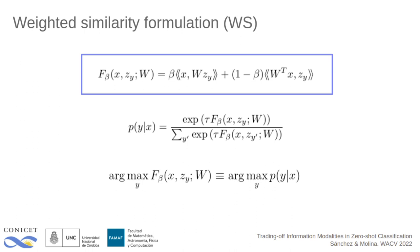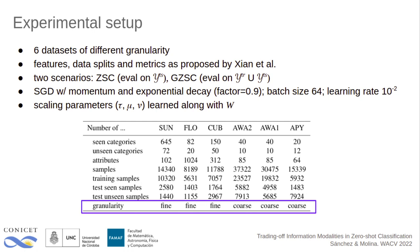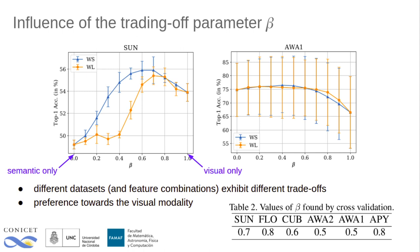We run experiments on six datasets of different granularities and followed the standard protocol proposed by Xiang et al. We consider both the zero-shot and generalized zero-shot settings. First, we study the effect of the trade-off parameter beta. We observe that the optimal value is dependent on the task, with a general preference toward the visual modality, especially in cases of fine-grained data. Interestingly, we found the optimal value of this parameter to be consistent between our two formulations, indicating that the optimal value is related more to the problem and feature spaces than to the particularities of the learning algorithm.